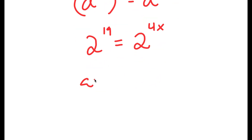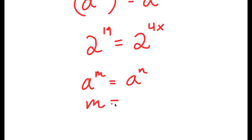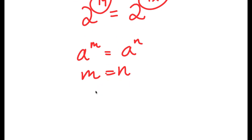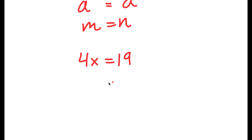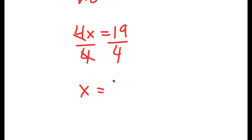If I have something in the form a to the power of m is equal to a to the power of n, this means that m is equal to n. So in this case, 19 is equal to 4x. Now we have a simple equation here. All I have to do is divide both sides by 4, and I get x is equal to 19 over 4.